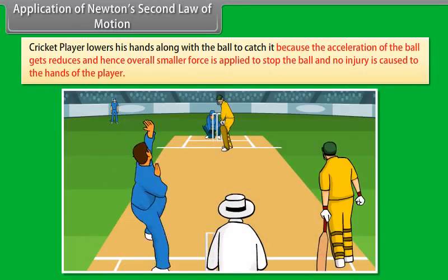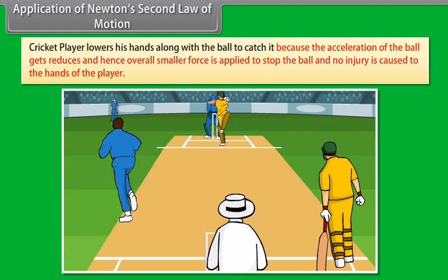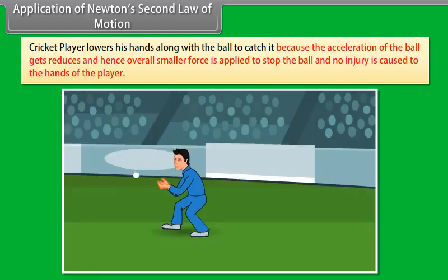Application of Newton's second law of motion: Cricket player lowers his hands along with the ball to catch it because the acceleration of the ball gets reduced and hence overall smaller force is applied to stop the ball and no injuries are caused to the hands of the player.